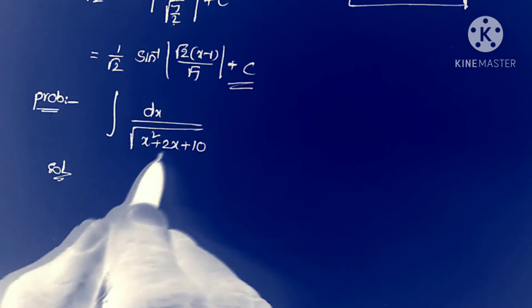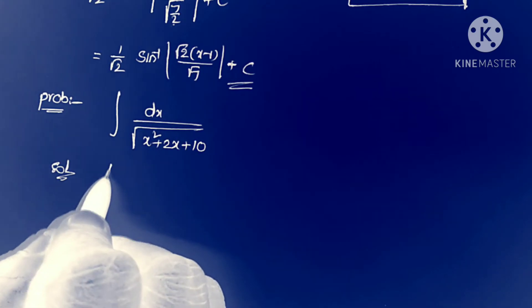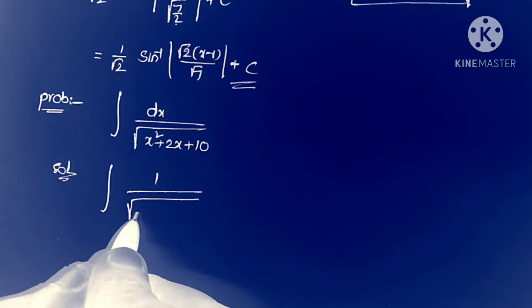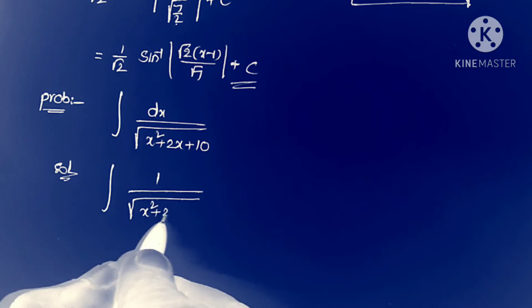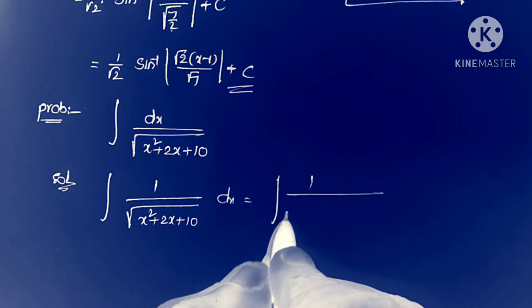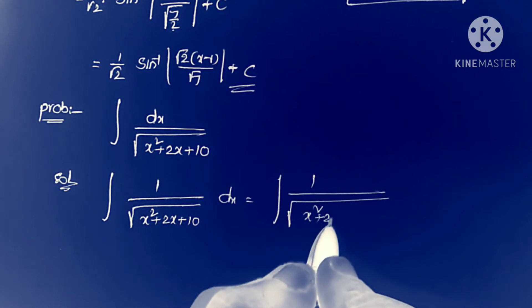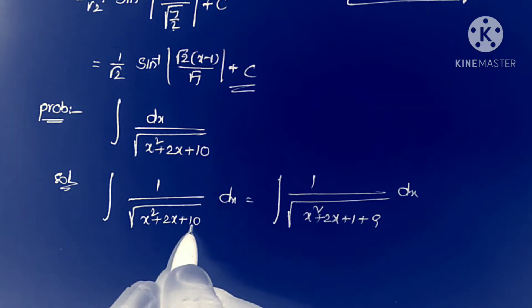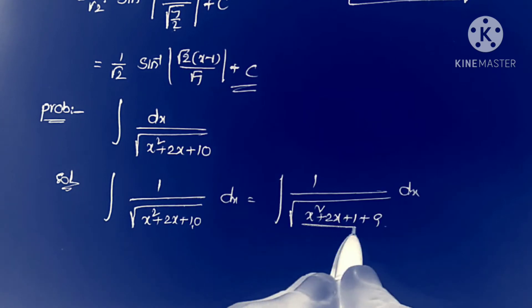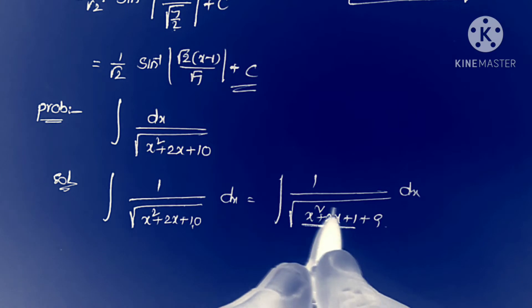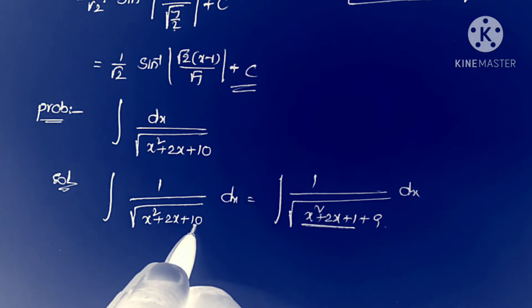This equals integral 1 by square root of x squared plus 2x plus 10, dx. We rewrite this as integral 1 by square root of x squared plus 2x plus 1 plus 9, dx. We split 10 as 1 plus 9 so that x squared plus 2x plus 1 becomes (x plus 1) whole squared.